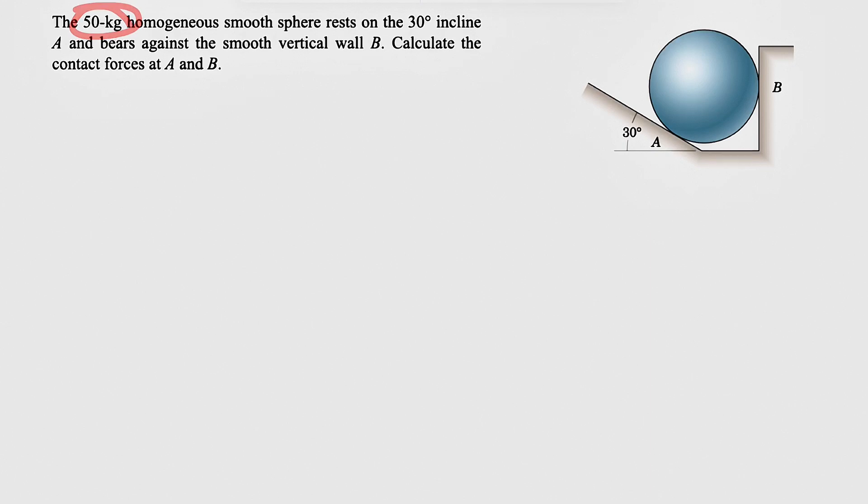We have a 50 kilogram homogeneous smooth sphere that rests on a 30 degree incline at point A and bears against the smooth vertical wall B. We need to calculate the contact forces at these two points, A and B.